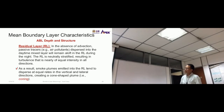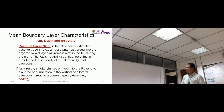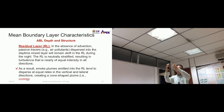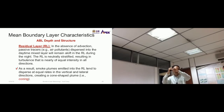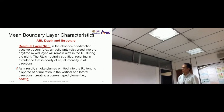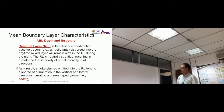Since the residual layer is neutrally stratified, turbulence within it is about the same throughout. As a result, smoke plumes emitted into the residual layer tend to disperse at equal rates in the vertical and lateral directions, creating a cone-shaped plume.